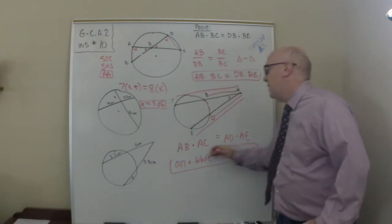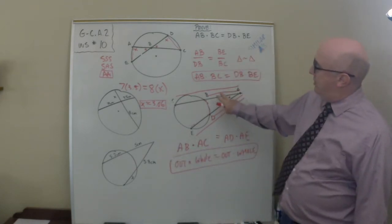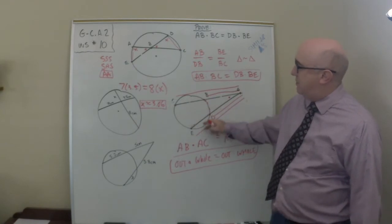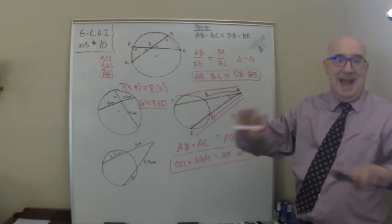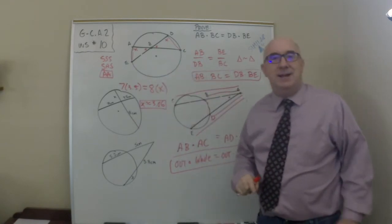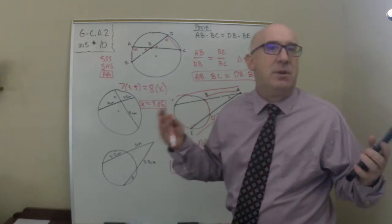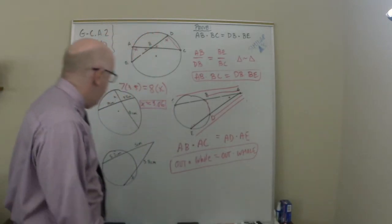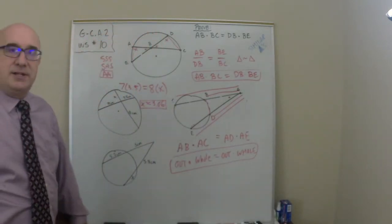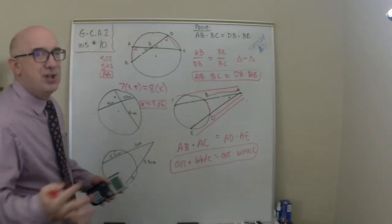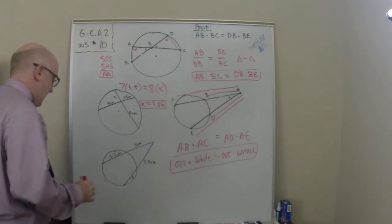This is important to remember because what a lot of students want to do is just multiply these two pieces, these two pieces, like the last one. Don't do that. Don't do that - that's what the bad kids do. Not bad, but just those that make mistakes. So let me show you quickly how this sets up.